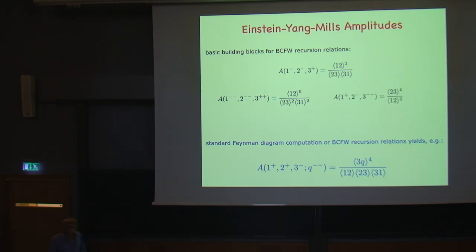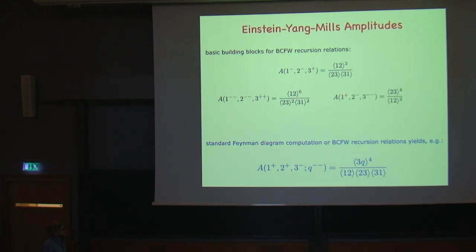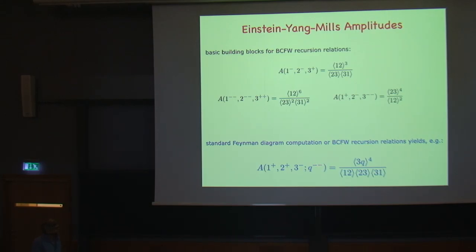To compute Einstein-Yang-Mills amplitudes at tree level, you can apply basic building blocks and an amplitude recursion relation to get higher-point amplitudes. You start with three-gluon, three-graviton amplitudes, and a mixed amplitude involving two gluons and one graviton. From these building blocks you can compute, for example, a five-point or four-point amplitude with three gluons and one graviton, where the graviton has helicity state minus-minus. You could also use standard Feynman rules, but BCFW recursion relations are much more convenient.